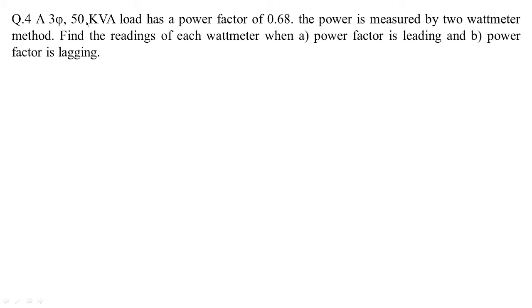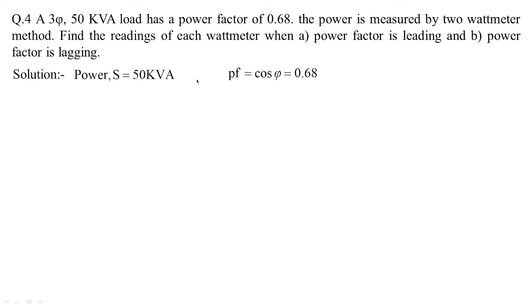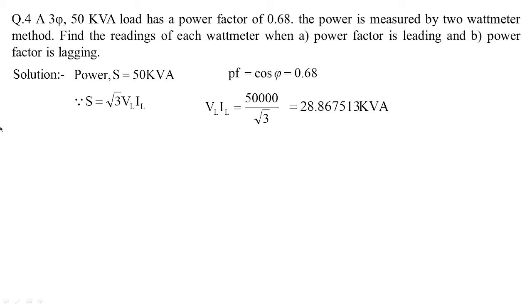In problem 4, a three-phase 50 kVA load has a power factor of 0.68. The power is measured by the two-wattmeter method; find the readings of each wattmeter when the power factor is leading and when it is lagging. The apparent power is 50 kVA, so VL·IL = 50000/√3 = 28867.513 VA. The power factor of 0.68 gives a power angle of 47.156 degrees.